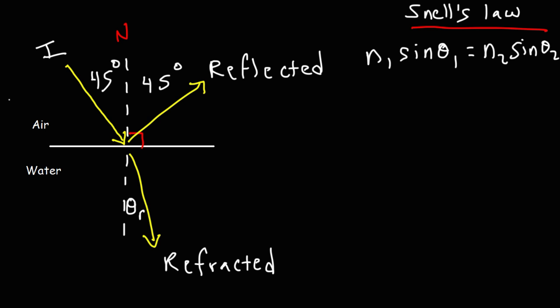The index of refraction for air is approximately 1. For a pure vacuum where there are no molecules, it's exactly 1. The index of refraction for water is 1.33. With this information, we can calculate the angle of refraction.